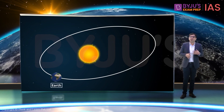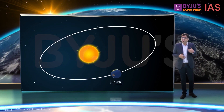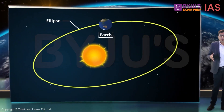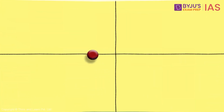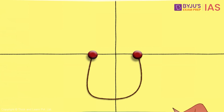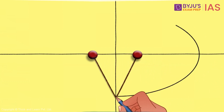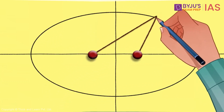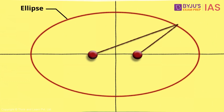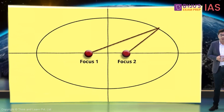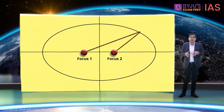We know the Earth revolves around the Sun in a fixed orbit, and this orbit is elliptical in shape. What does an ellipse look like? Suppose I have two pins fixed on a table and connected by a thread. If I take a pencil and move it around while keeping the string tight, the shape I end up with is an ellipse. These two points where the pins are fixed are called the foci, and each point individually is called a focus.